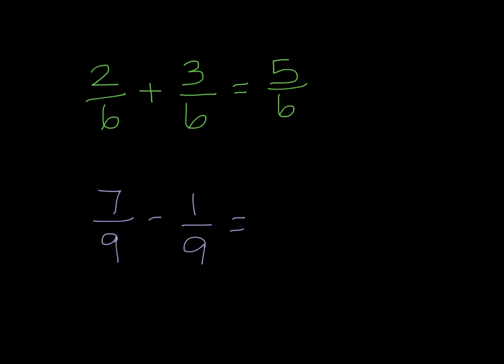So for example, if I have a fraction like 2 sixths and I add it to 3 sixths, I can add my numerators and keep my denominator the same and get 5 sixths. Likewise, when I'm subtracting, if I have a fraction like 7 ninths and I subtract 1 ninth, I'm going to subtract the 7 and the 1 and get 6 and keep my denominator the same. I can also go ahead and simplify this into a more simplified fraction.